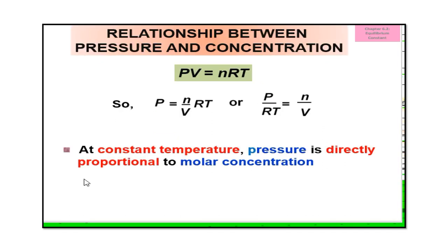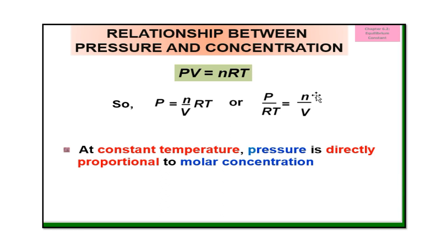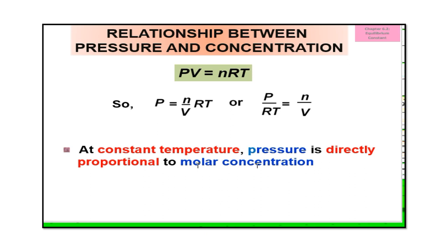This is the relationship between pressure and concentration. From PV = nRT, we get P = (n/V)RT. Rearranging, P/RT = n/V. Since n/V is moles per volume, that is the formula for concentration. So at constant temperature, pressure is directly proportional to molar concentration.